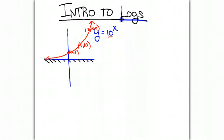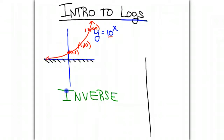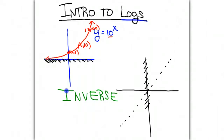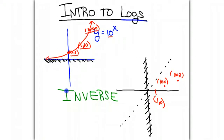Now we're going to create the inverse of this function. We know how to create the inverse by reflecting across the line y equals x. If we have a horizontal asymptote on our original function, that will translate to a vertical asymptote on our inverse. We also know that we switch the x's and y's. So the point (0, 1) becomes (1, 0), the point (1, 10) becomes (10, 1), and the point (2, 100) becomes (100, 2). If we sketch our graph, our inverse will look like this.